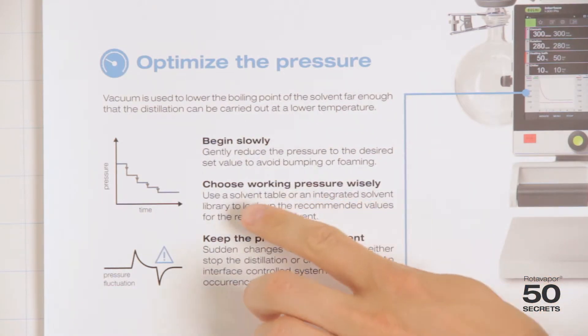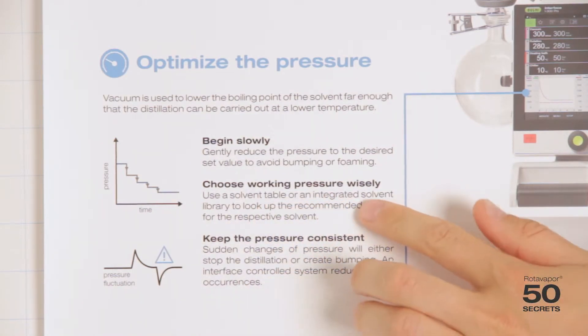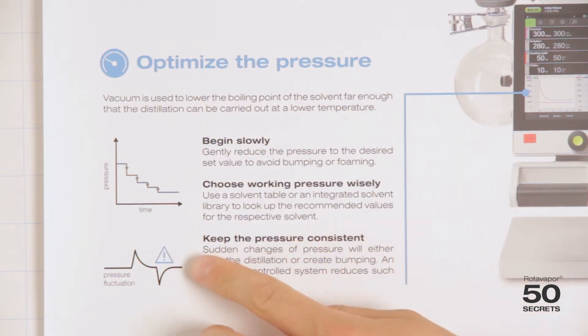The second topic is choose the working pressure wisely. Usually you just use a solvent list or a solvent table to find the right vacuum. And the third one is to keep the pressure consistent.